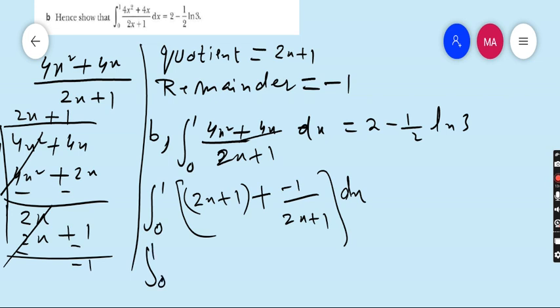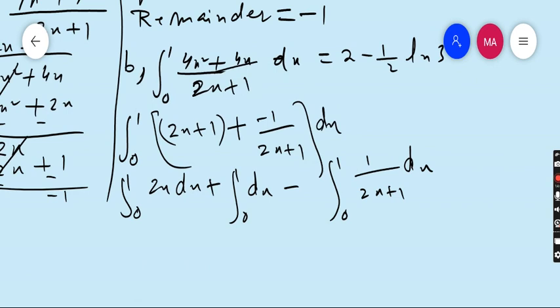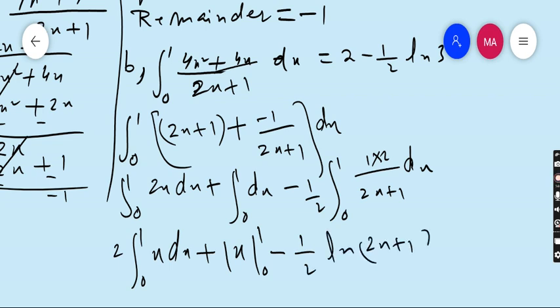Integrate 0 to 1: 2x dx plus integrate 0 to 1, 1 dx, minus integrate 0 to 1, (1 upon 2x plus 1) dx. 2 goes outside, 0 to 1 x dx, plus dx is x from 0 to 1. The derivative of denominator is 2, so multiply by 2 and divide by 2. So minus 1 upon 2, and the integration is ln (2x plus 1), limit 0 to 1.